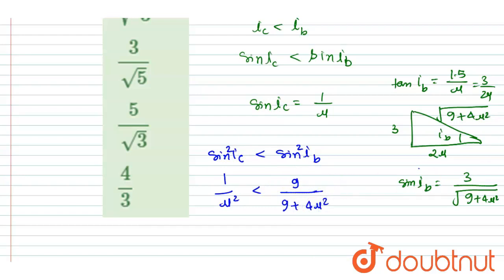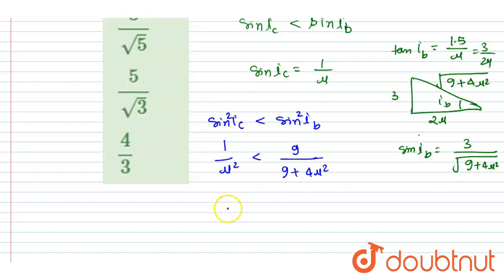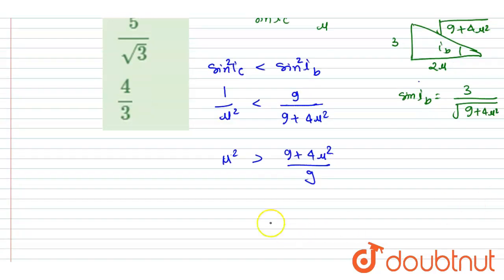Now let's invert the two, then I will write mu square should be greater than 9 plus 4 mu square by 9, right? Okay, so let's multiply both sides by 9. Then I will write 9 mu square. So if I will write 9 mu square should be greater than 9 plus 4 mu square.